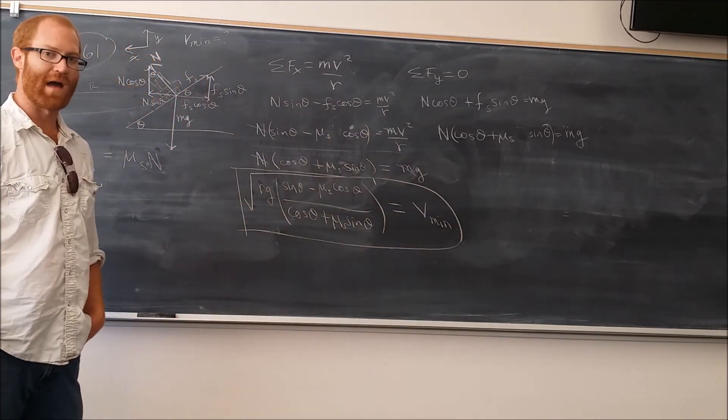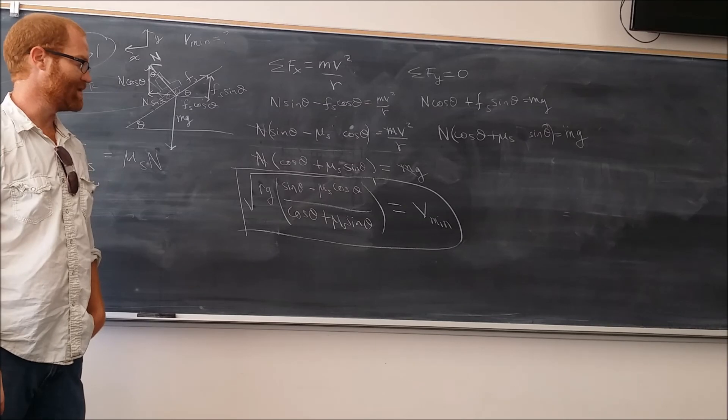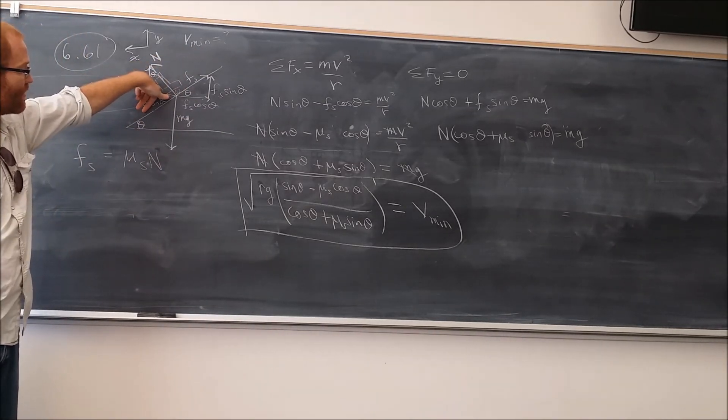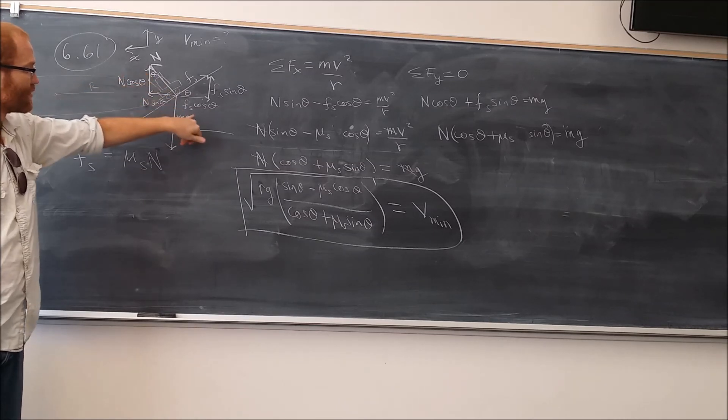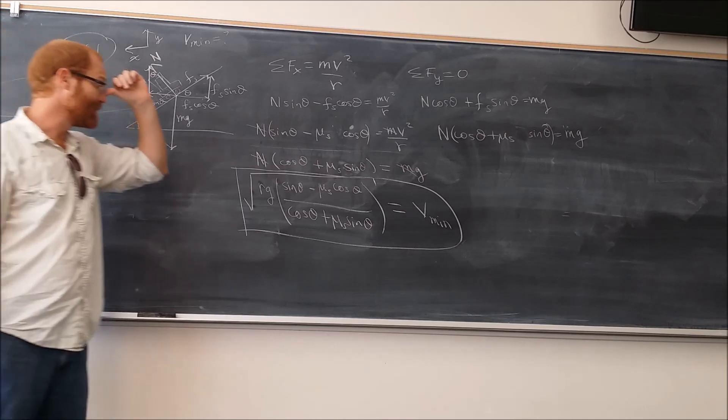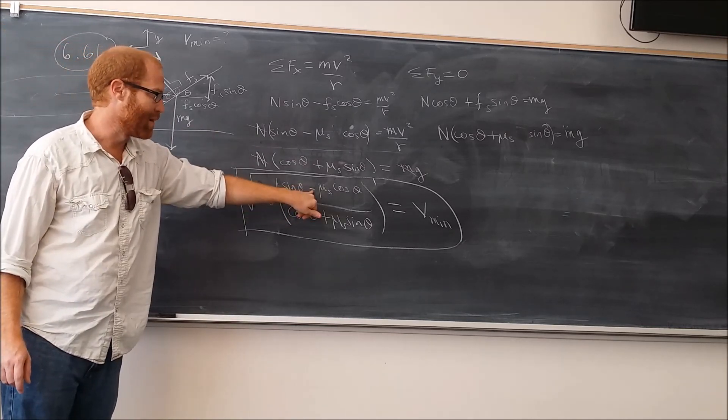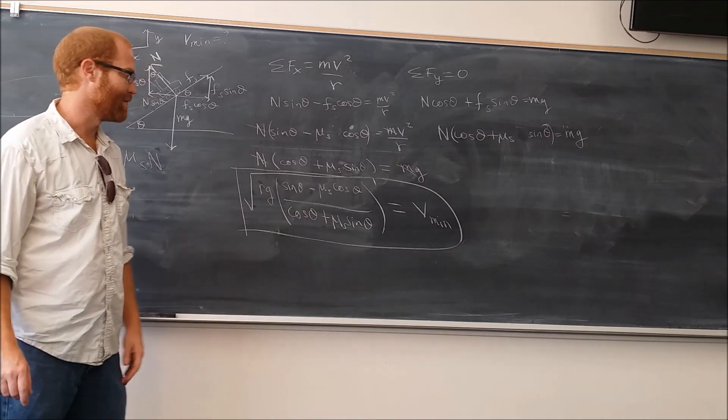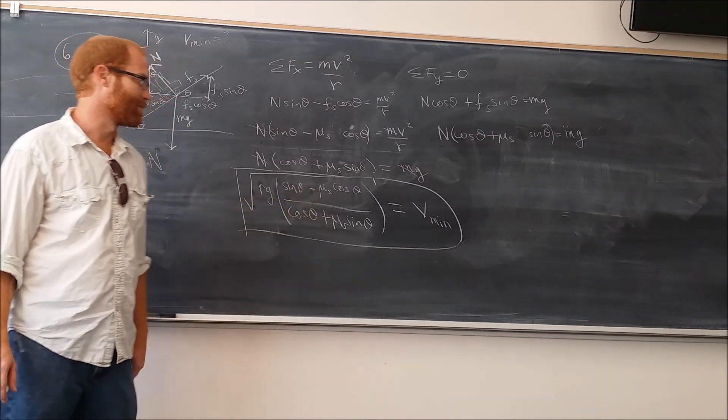Now, in order to find the maximum velocity, the only thing that's going to change is that the friction force is now going to be pointing back in this direction here. And as a result, the direction of this will be here and the direction of this will be down. And so, the only thing that's going to change is that that's going to become a positive and that's going to become a negative. So, V max, you're just going to have sine theta plus mu s cosine theta over cosine theta minus mu s sine theta.